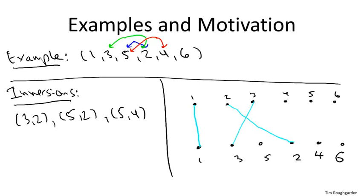It turns out, and I'll leave it for you to think this through, that the number of crossing pairs of line segments precisely corresponds to the number of inversions. So we see that there are one, two, three crossing line segments. And these are exactly in correspondence with the three inversions we found earlier. Five and two, three and two, and five and four.